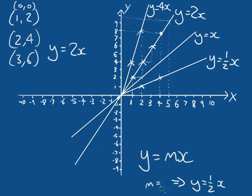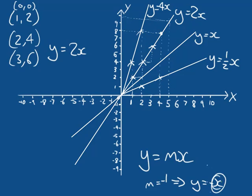Let's choose a gradient of minus one. So Y equals minus one times X, which simplifies to Y equals minus X. If X equals 0, Y equals 0 — passing through the origin. If X equals 2, Y equals minus 2. If X equals 5, Y equals minus 5. If X equals negative 5, Y equals positive 5.